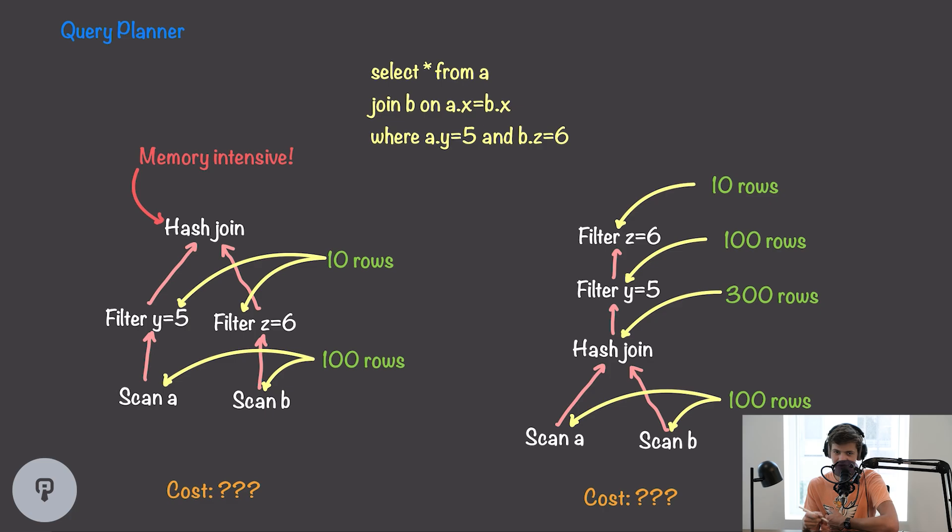For our second option here, where we're doing our filter after the fact, our join is actually going to be combining all 100 rows of both of these scan operations. We can do a similar thing here where we're looking at the distribution of the values of the columns that are being joined together. Let's say that we estimate the result will have 300 rows. Once we do our first filter, we end up with 100 rows, and once we do our second filter, we end up with 10 rows. So, if we're looking at these two operations, we can see that the one on the left is probably going to be better in this case. Our hash join only has to operate on 10 records each instead of 100 records each in a second option, and our filters only have to operate on a maximum of 100 records, whereas with the second option, this first filter has to deal with 300 records, and the second one has to deal with 100 records. So, a lot of our operations are going to execute a lot faster on this leftmost plan.